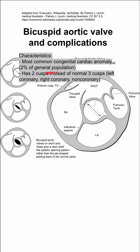In patients with a bicuspid aortic valve, they have two cusps instead of the normal three cusps. The normal three cusps are the left coronary, right coronary, and non-coronary cusps.